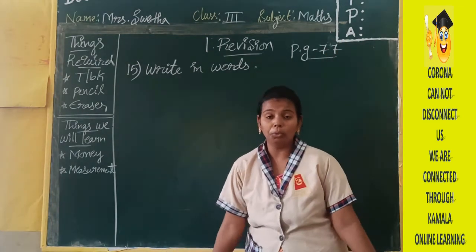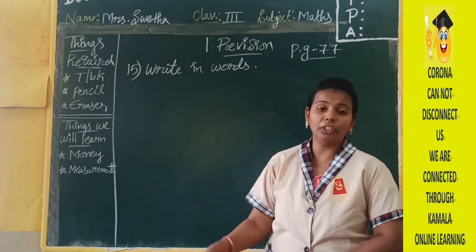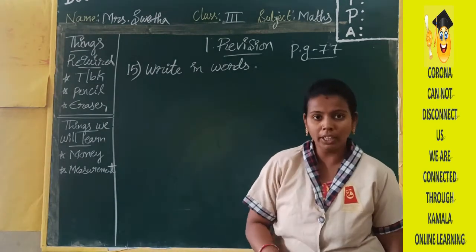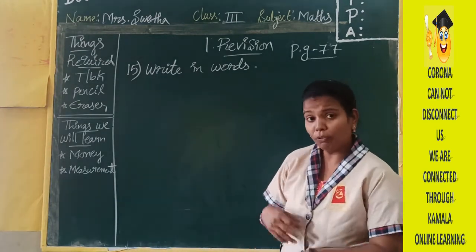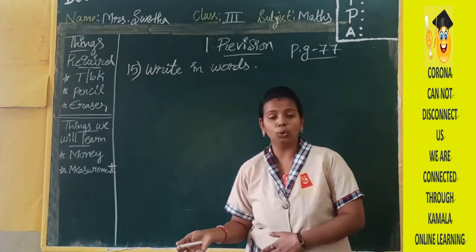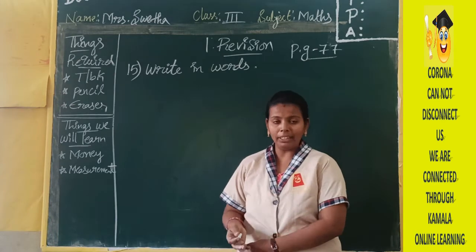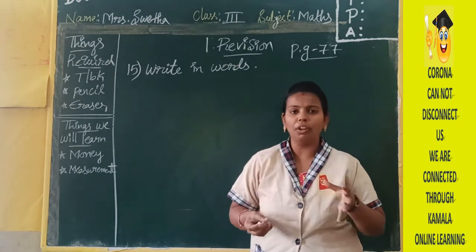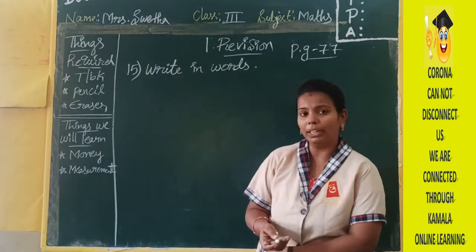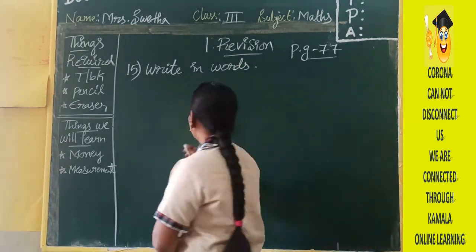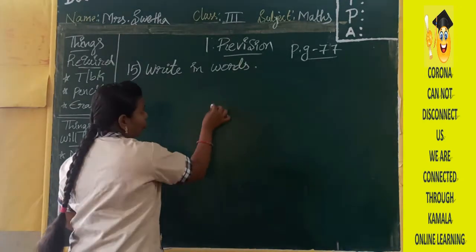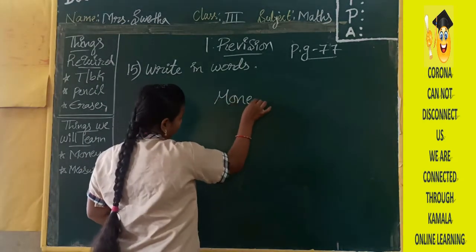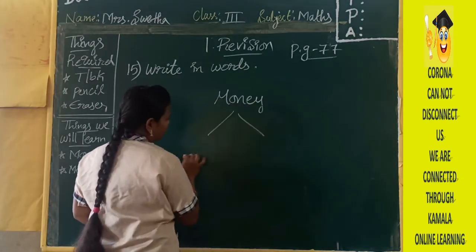Every one of you get ready with your term book, page number 77. Before entering into the written exercise, I just want to give you a little information about our topic — money. Money is of two types.